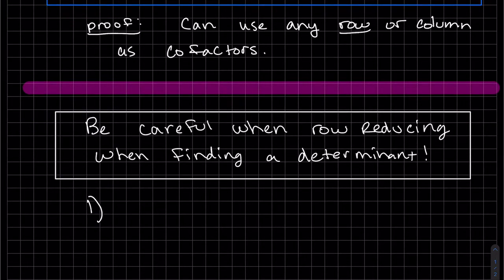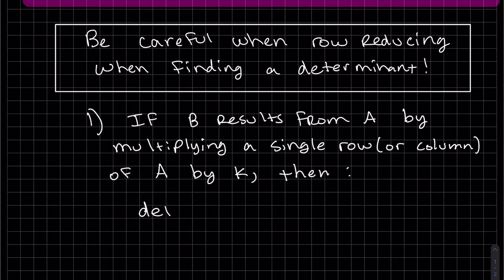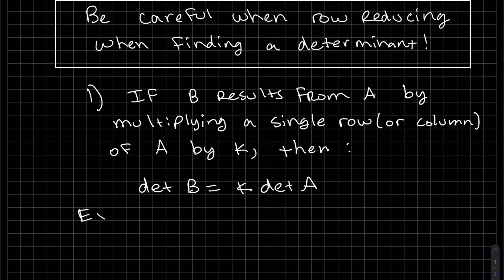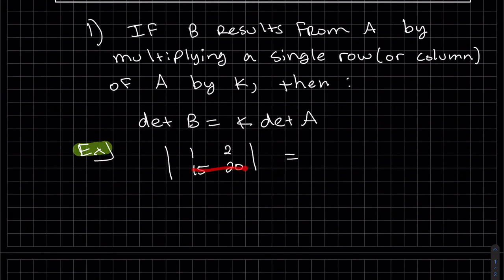So we're going to look at the three ways of reducing a matrix. This one's best seen as an example. So basically, if you want to factor out that five, you have to put it in the front. That's what it says.